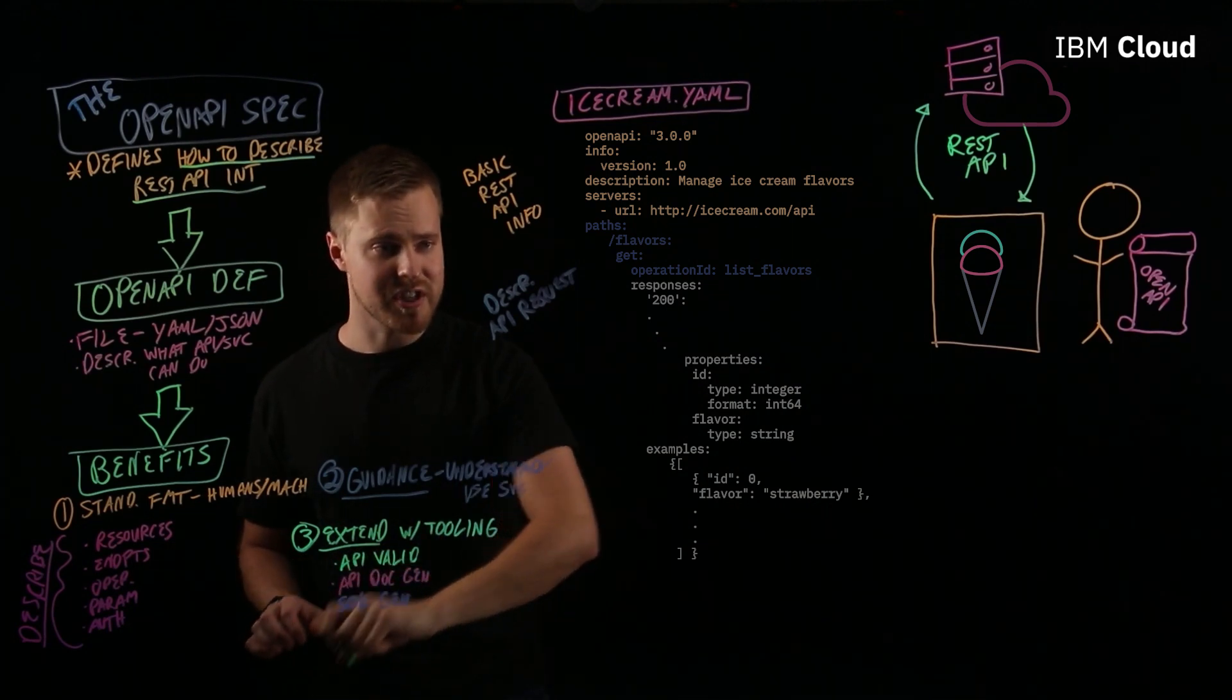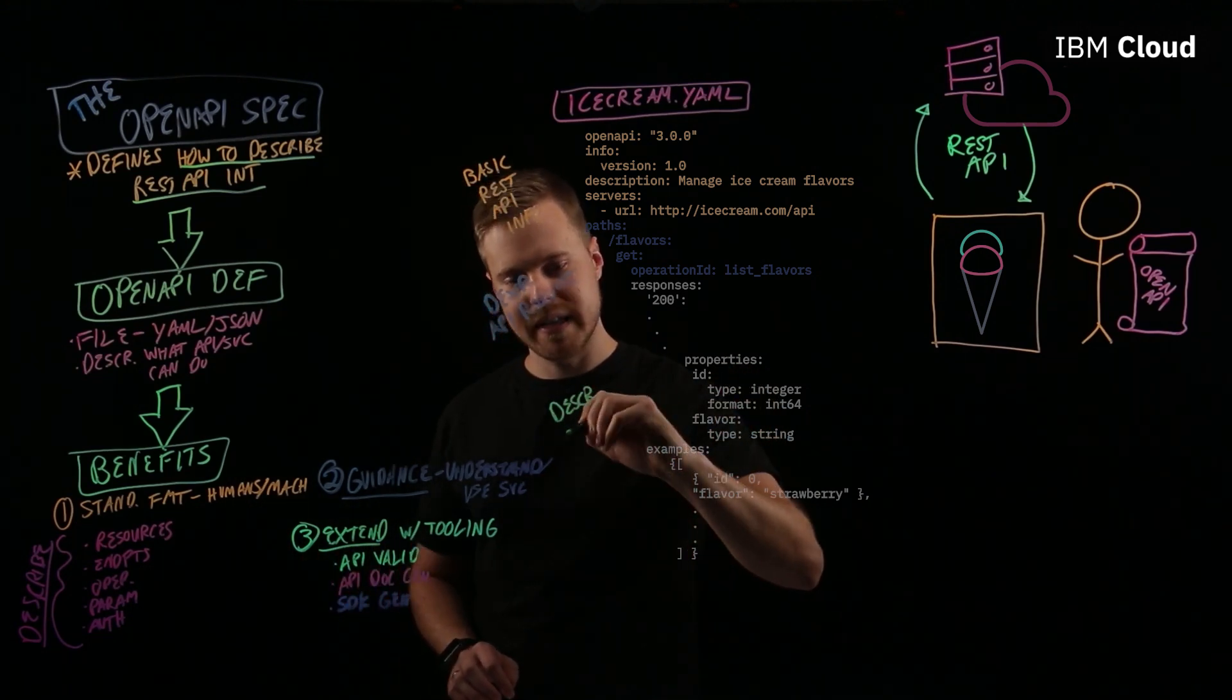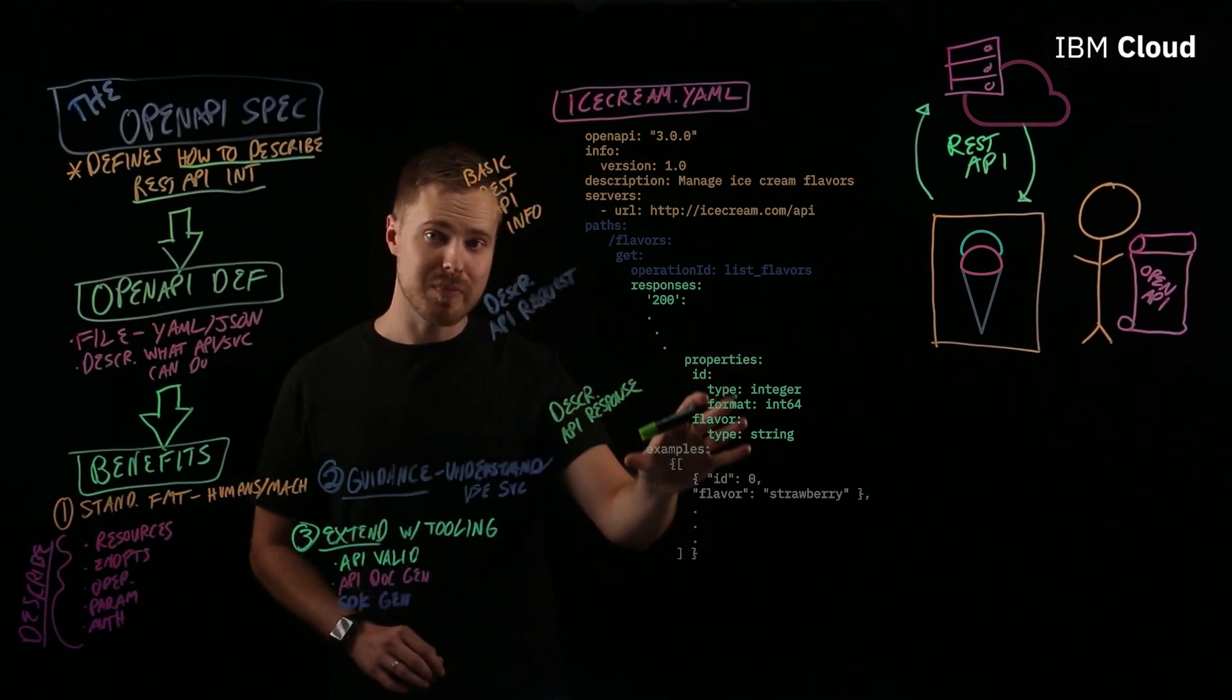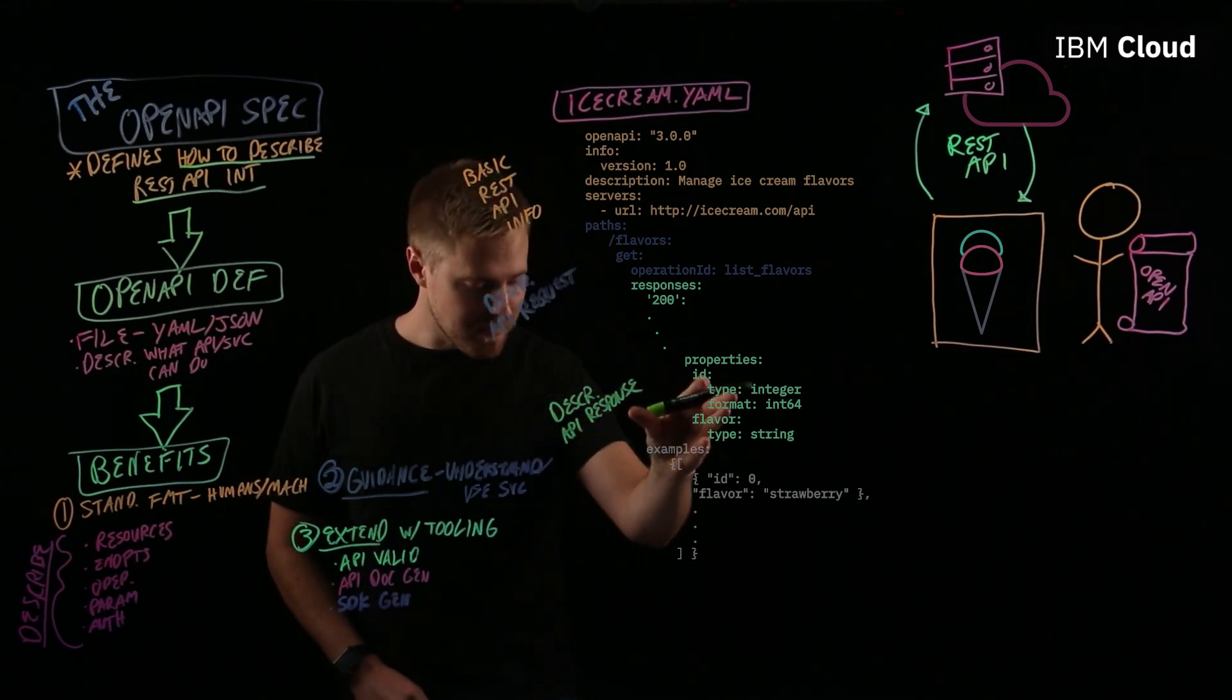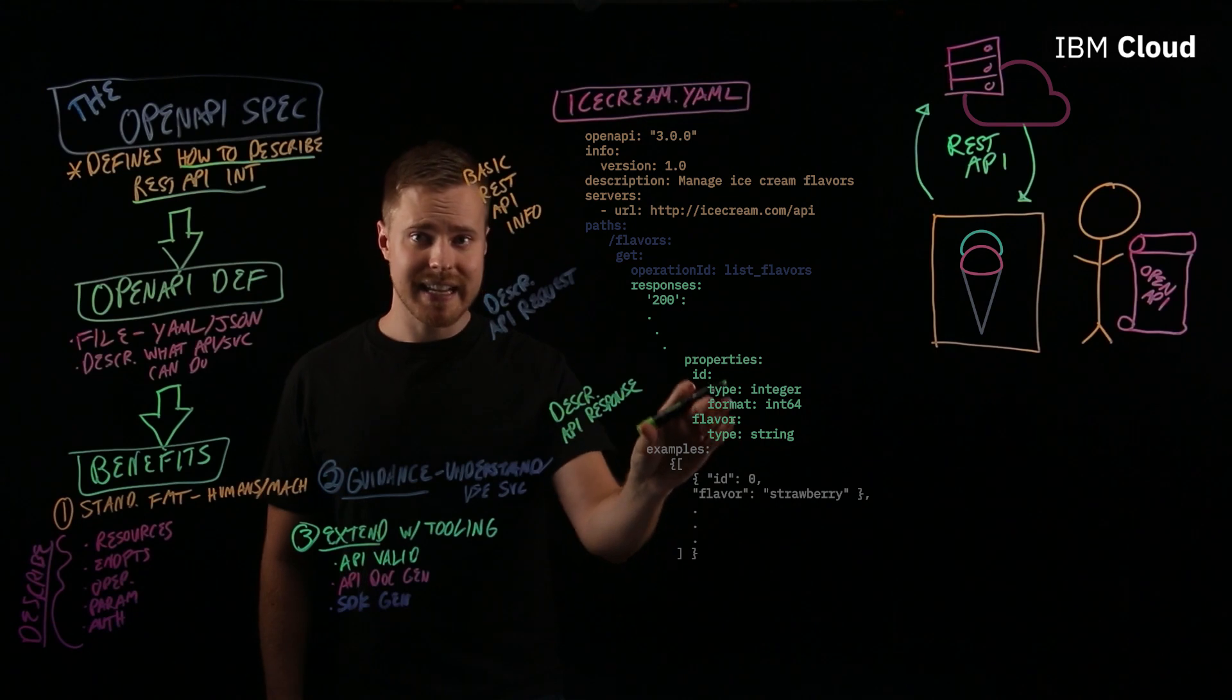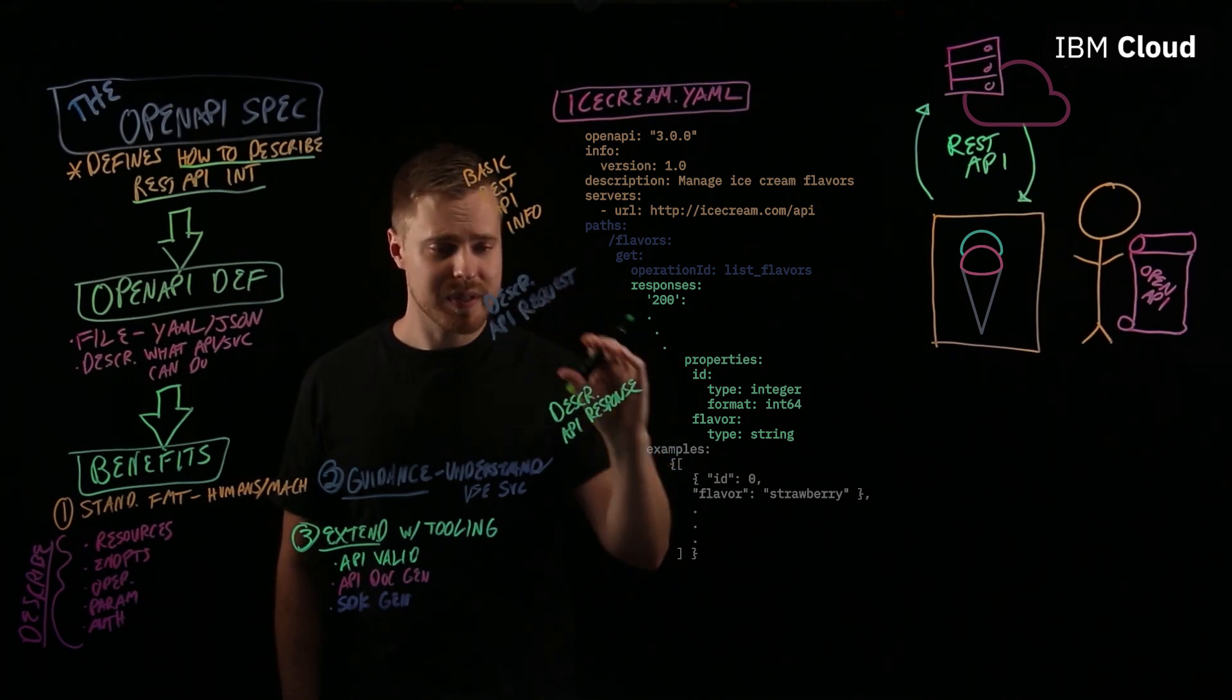And then the next section of the OpenAPI definition might be a place to describe the API response. Describing the REST API response, you see the 200 response might have these properties like flavor, you have an ID, it says the data type as well, string in the case of flavor. So, all of this information clearly describes exactly the request and the data you'll get with your response.